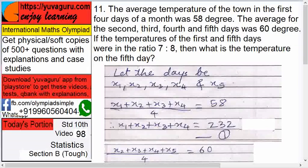Average for first four days is given, then average for second, third, fourth, fifth is given, then ratio of first and fifth is given. So we have to find the temperature of the fifth day. There are five days, let the days be X1, X2, X3, X4, and X5.